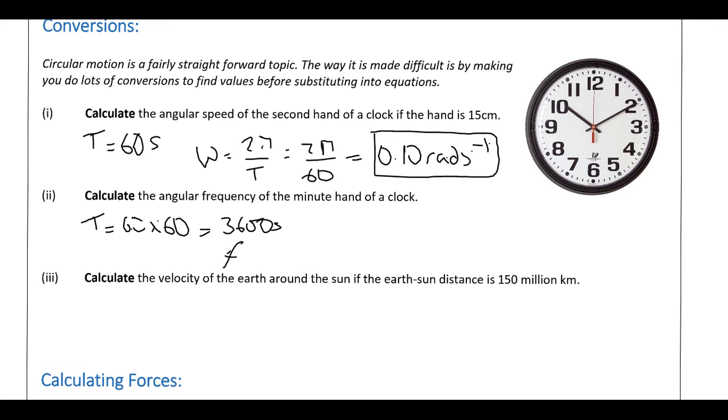Frequency is just 1 over the time period, so 1 over 3600. And then that's going to be equal to 2.8 times 10 to the minus 4 hertz. Alright, so some fairly straight forward ones.